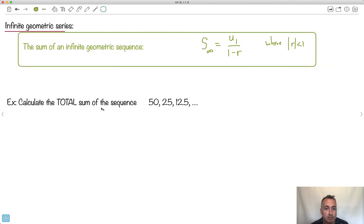We'll calculate the total sum of this sequence: 50, 25, 12.5, and so on. First, let's check if it's geometric. Can we find u1? Yes, it's 50. Can we find r? r is going to be 25 over 50, which reduces to 1 half. So that'll work. Because of that, I can check: is the absolute value of r less than 1? Yes, because this is 1 half, which is smaller than 1. So that works. That means I can use this equation.